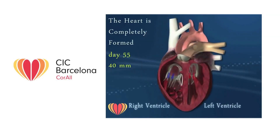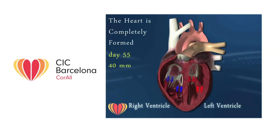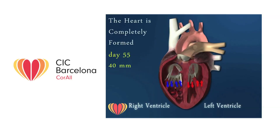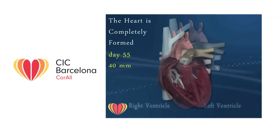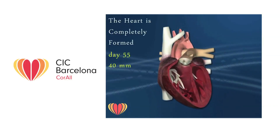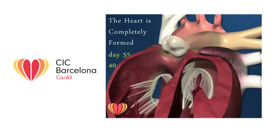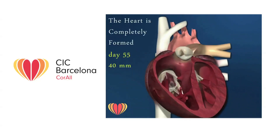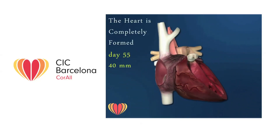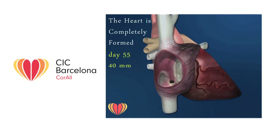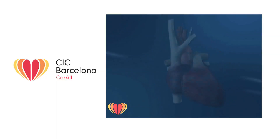The two circulations, the venous one and the arterial one, are separated. From now on, the heart is responsible for pumping blood throughout the human body.